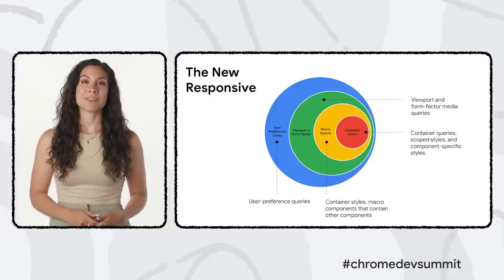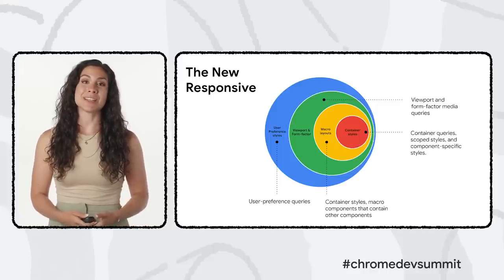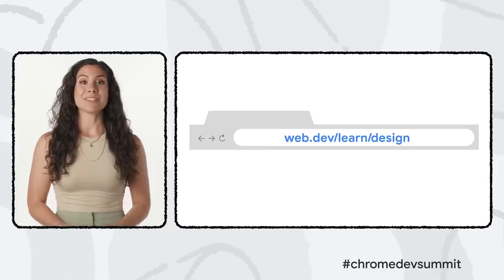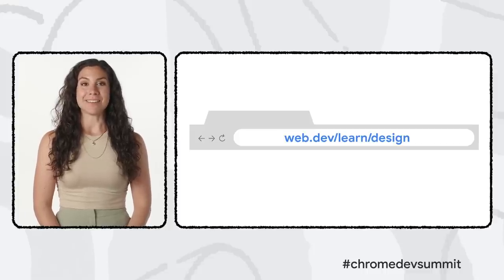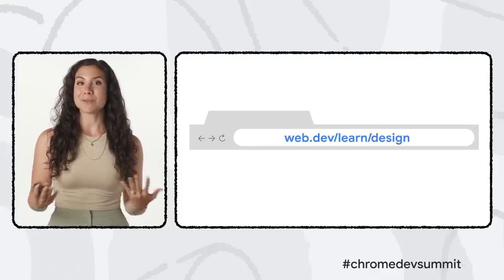The web is getting better at allowing high-quality, delightful user interfaces. Responsive design is no longer just about making sure an interface looks good on desktop and mobile — developers now have tools to create customized user experiences based on personalized user preferences in a component-driven architecture model, which Chrome is calling 'the new responsive.' Chrome is also partnering with Jeremy Keith of Clear Left to launch Learn Responsive Design on Web.dev, a free online course covering everything needed to design for the new responsive web.